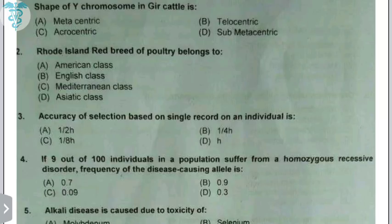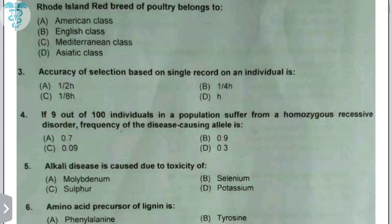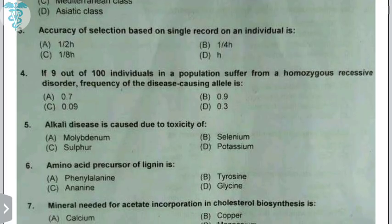The accuracy of selection based on a single record on an individual is the square root of heritability. Next, if 9 out of 100 individuals in a population suffer from a homozygous recessive disorder, the frequency of the disease-causing allele is: Q² = 9/100, so Q = √(9/100) = 0.3. The answer is 0.3.